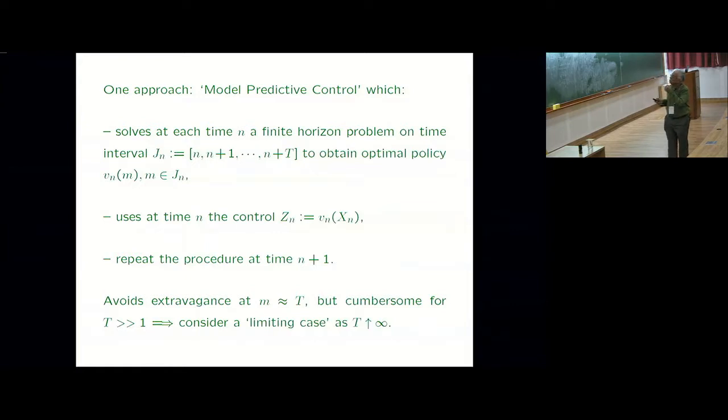This is also related to something which is extremely hot in control. There's something called model predictive control. These are in principle infinite horizon problems. They mean it generally very large horizon. What they do is that infinite horizon problems, these dynamic equations can be hard to solve sometimes. So they just solve a finite horizon problem for a large horizon. Suppose at time n, I solve a problem from n to n plus t.